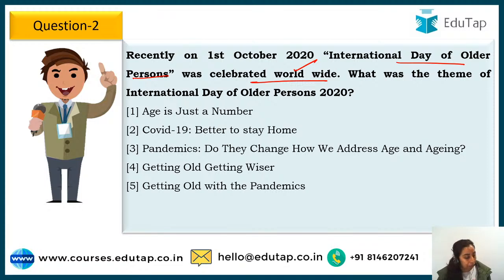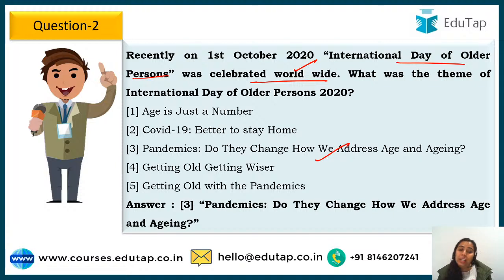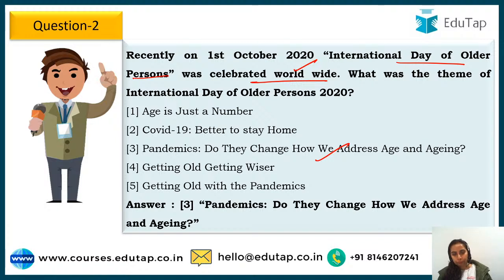The theme was: 'Pandemics — do they change how we address age and aging?' That is Option 3, and it is easy to remember because it is in sync with the current situation — how pandemic affects our lives and how we address age and aging.